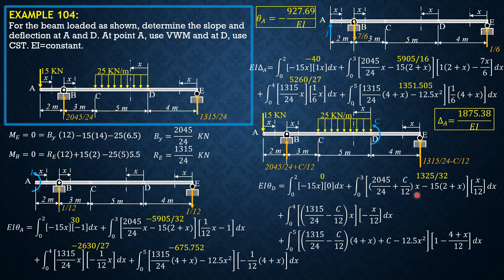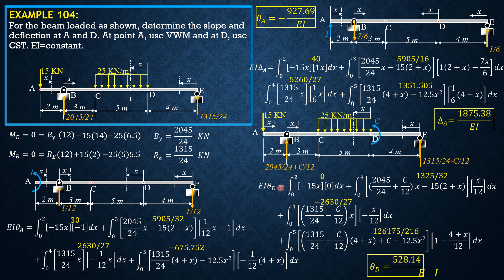The third integral value is 1325/32. The integral of 1315/24·x times −x/12 (since C = 0) gives −2630/27. The last integral of (1315/24·(4+x) − 12.5x²) times (1 − (4+x)/12) gives 126175/216.